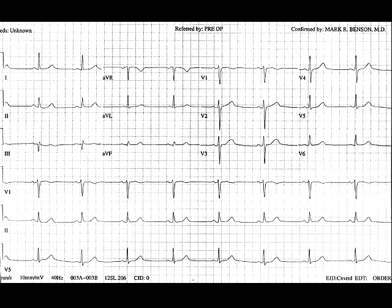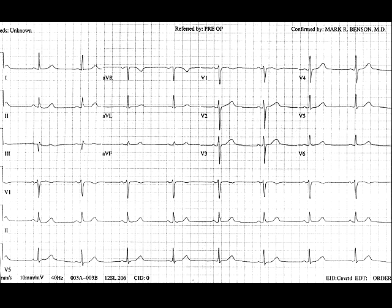R-wave progression is normal, with the RS transition occurring between V3 and V4. This transition is the point at which the R-wave becomes taller than the S-wave is deep. When this occurs early, with R greater than S in V1 or V2, you should think about RVH, posterior infarct, or simply counterclockwise rotation of the heart.